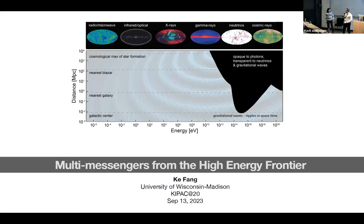Ker received her PhD from the University of Chicago in 2018. She spent a few years as a JSI fellow in Maryland, then came here in 2018 as an NHFP Einstein fellow until 2020. Since then, she's moved on to a faculty position at the University of Wisconsin in Madison, where she works on multi-messenger astrophysics.